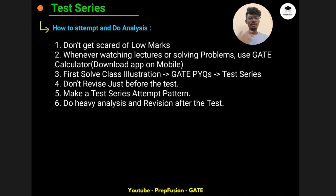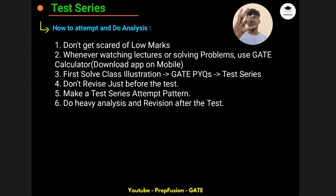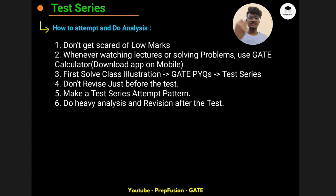During my time, what I did was: for a full-length mock test, I first attempted the aptitude paper, then went to the technical section. In the technical section, I attempted easy questions first and skipped difficult or tricky questions — I marked them for review. If I read a question and it seems doable but a bit lengthy or difficult, I mark for review and move on. So in the first round I attempt easy questions, then medium, then tough — three rounds like this.